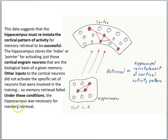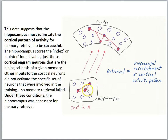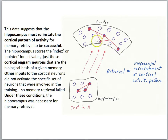Under these conditions, the hippocampus was necessary for memory retrieval. This data suggests that the hippocampus must reinstate the cortical pattern of activity for memory retrieval to be successful. We've seen this before — the hippocampus stores the index or pointer for activating just those cortical engram neurons that are the biological basis of a given memory. Other inputs to the cortical neurons did not activate the specific set involved in training, and the hippocampus was necessary to reactivate the cortical memory trace.